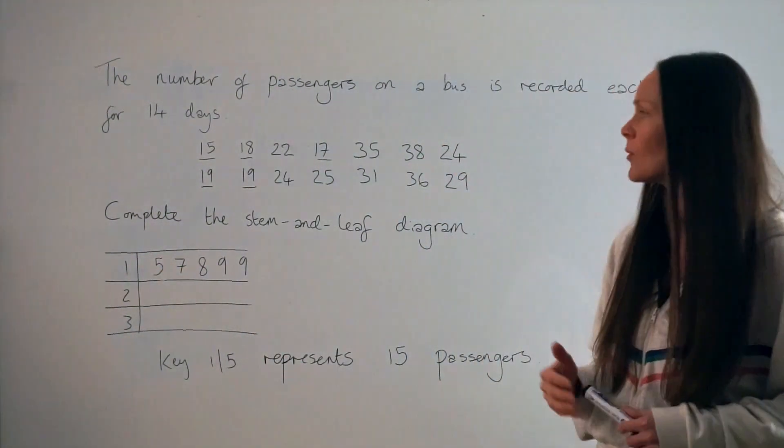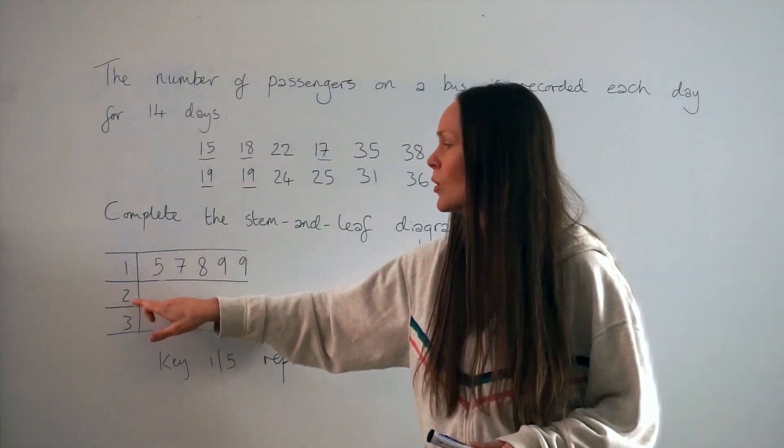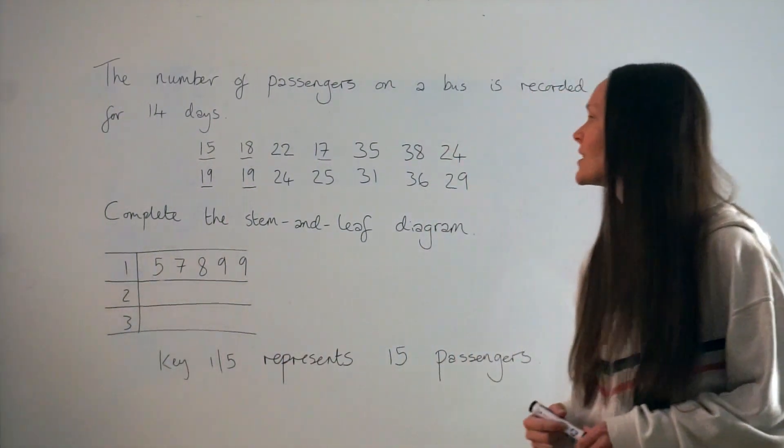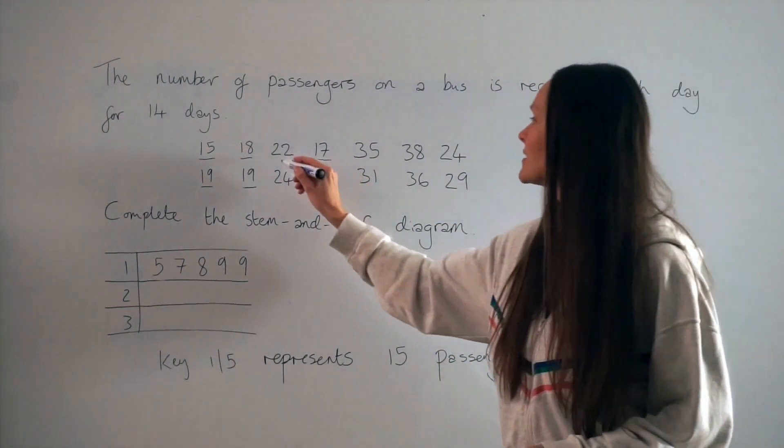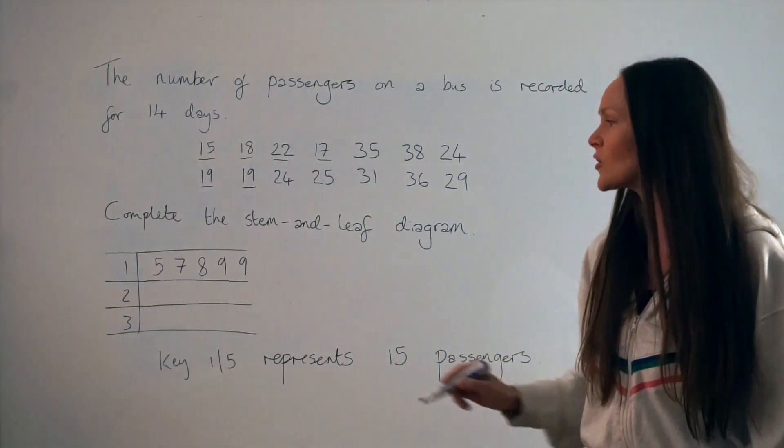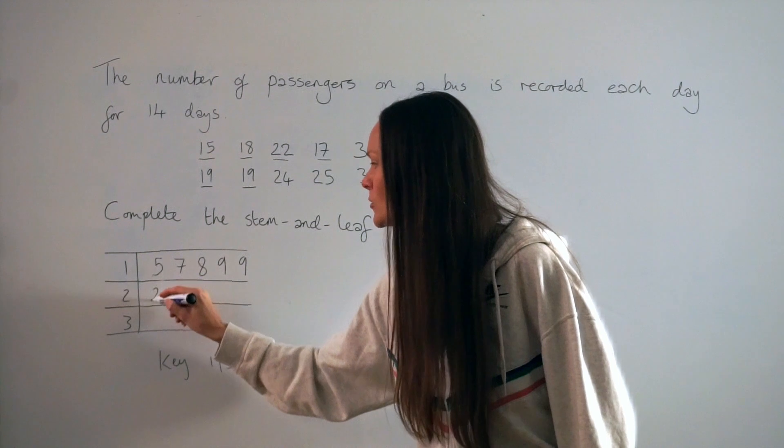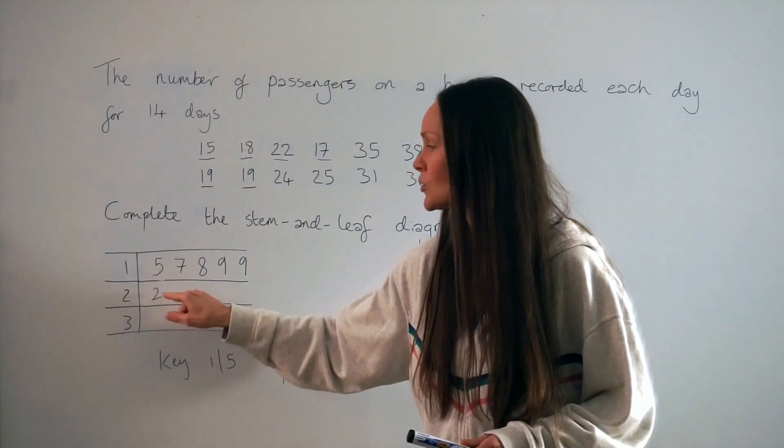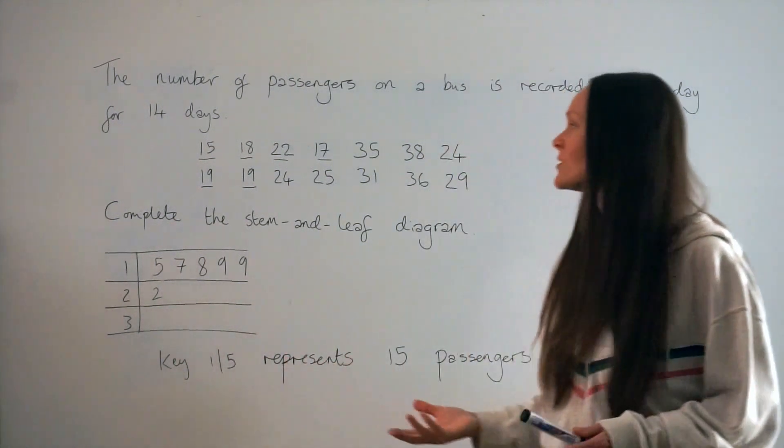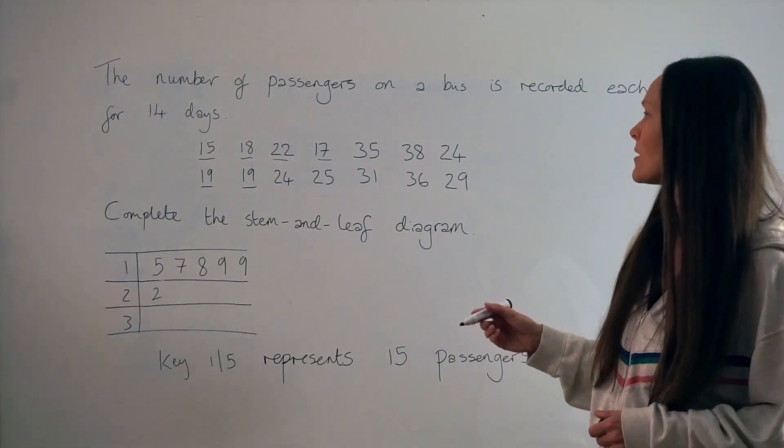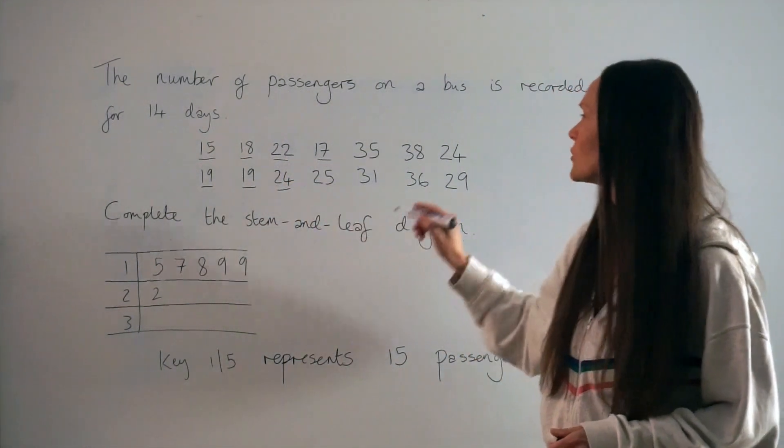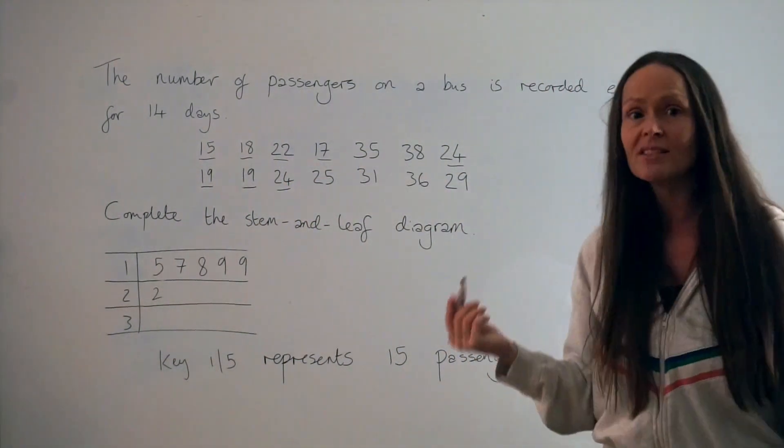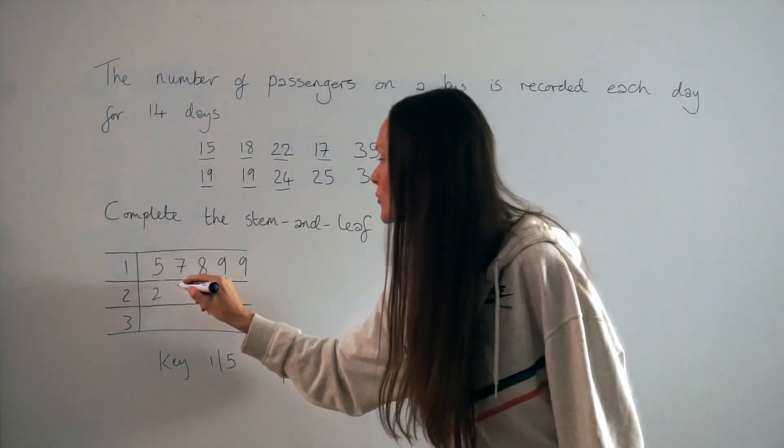So now we can start with all the numbers starting with a 2, all the numbers in their 20s. So the smallest number in the 20s is this one, 22. So I'm going to write down the number 2 to begin with. So here I've got 2-2, which means 22 passengers. Next we have 24, and there are two 24s, so I need to make sure I write down the number 4 twice.